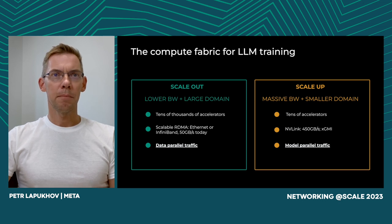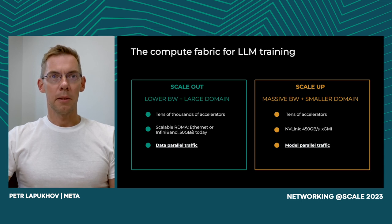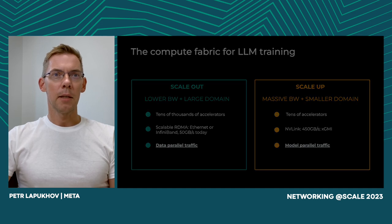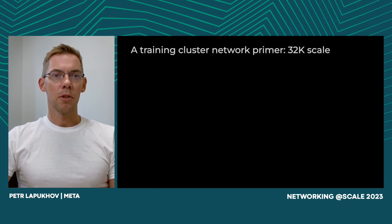When you train a model in parallel fashion, you generate two types of parallelism at a high level: data parallel and model parallel. The scale-out topology naturally maps to data parallel traffic, and scale-up naturally encapsulates model parallel traffic. Let's look at how this appears topologically.